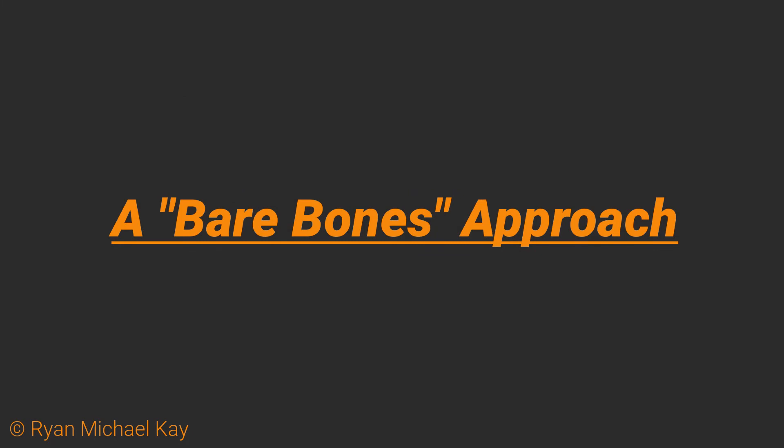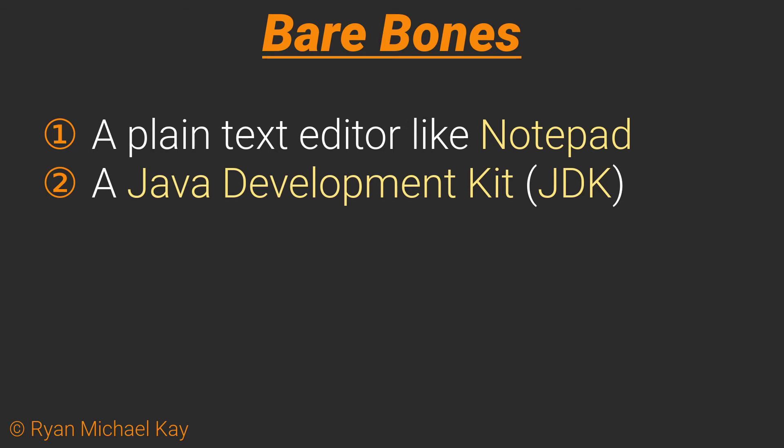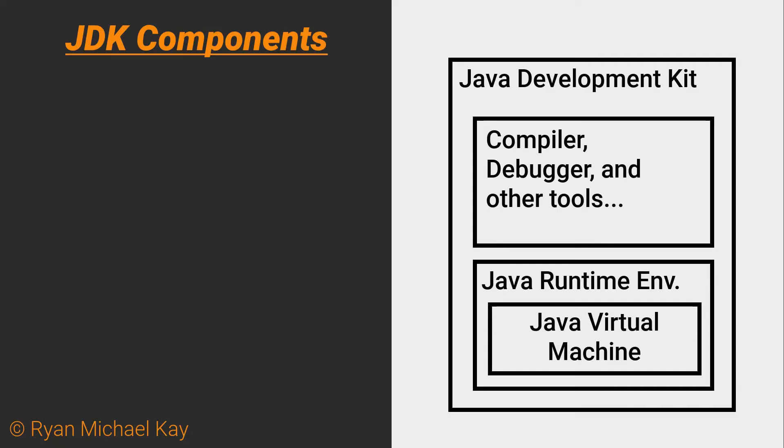Believe it or not, it is entirely possible to write a functioning Java application using only a plain text editor like Notepad and a Java Development Kit, often abbreviated as JDK. The JDK gives us two very important tools: the Java compiler program JavaC, which as discussed in the previous episode, will create our Java bytecode.